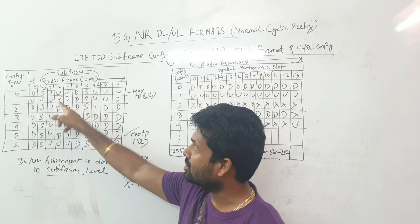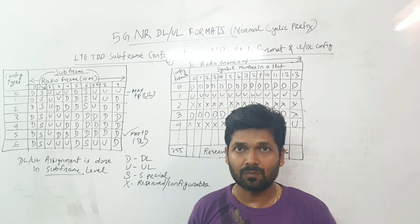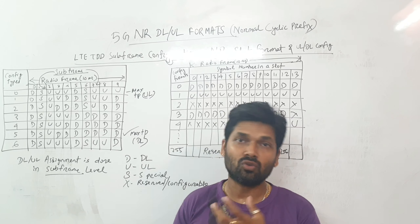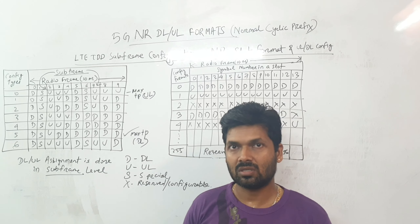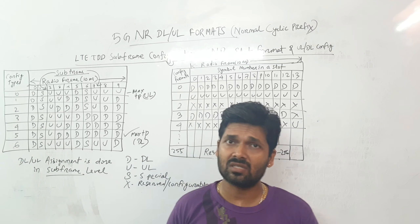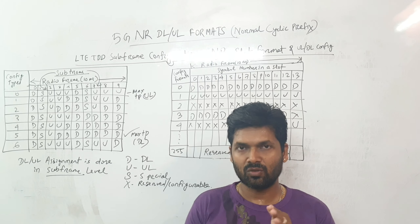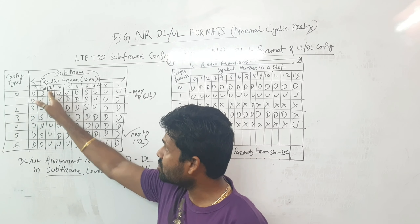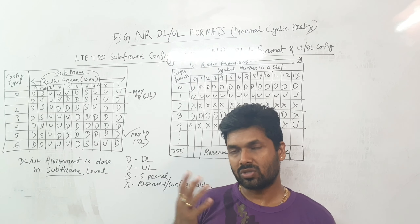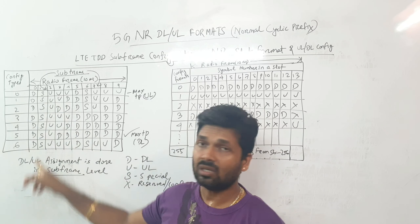Across all seven configurations, the first subframe is always downlink — because the network sends signaling, control information, broadcast channels, paging, and other control data in downlink. The second subframe is always a special subframe used to switch between downlink and uplink. The third subframe is always uplink, allowing UEs to send uplink signaling and control information to the network.